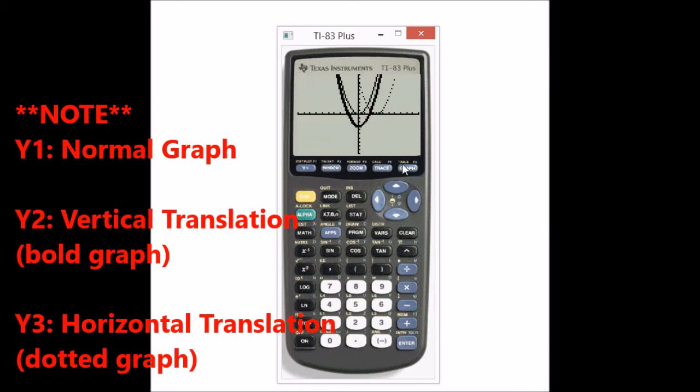The first one is a normal graph that starts at zero. The bold one is shifted down and then the dotted one is shifted in the positive direction. So let's take a look at the graphs again. You have minus three for the second one and minus three for the third one. You see how it goes in opposite directions.